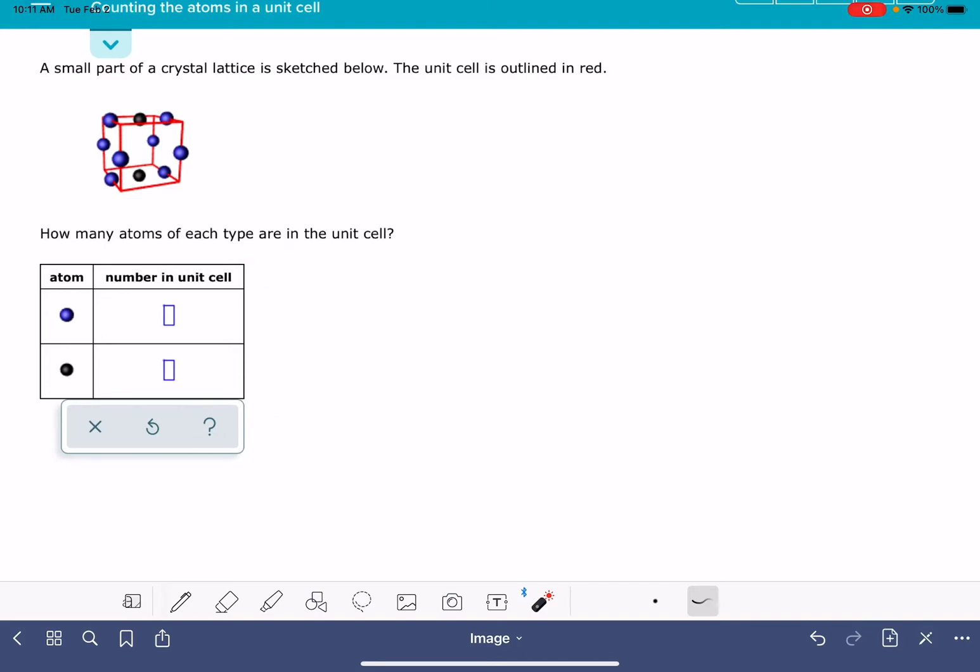The only real trick about this problem is that you have to recognize that not the whole entire atom, not 100% of the atom, is actually inside the unit cell. So this problem wants us to focus on the portions of the atom that are inside this cube and ignore portions of the atoms that are hanging out outside of the cube.